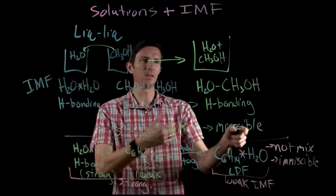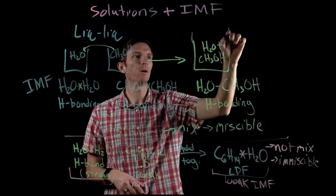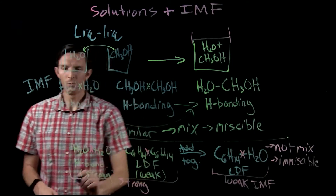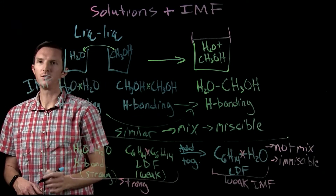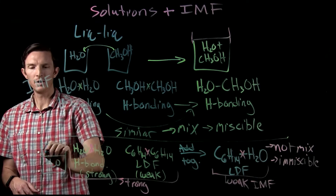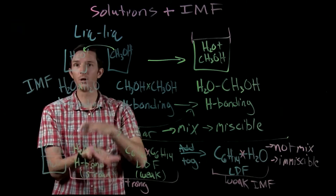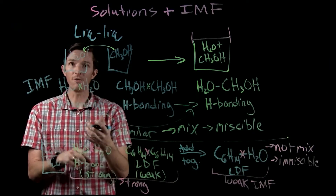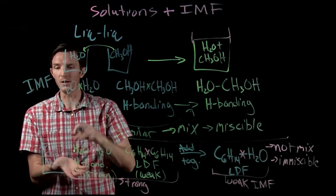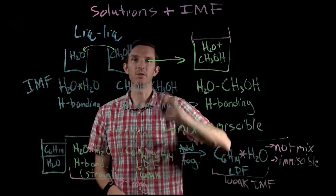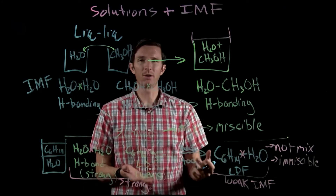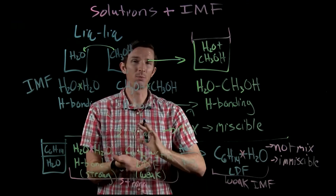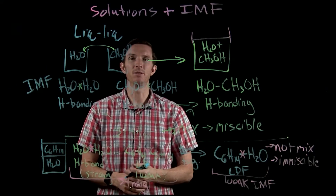What does this look like visually? If we take water and methanol — miscible substances — and mix them, they'll be uniformly mixed together. But if we add hexane and water and try to mix them, we'll notice two distinct layers: a water layer and a hexane layer. They won't mix — just like oil and water in salad dressing. They separate into two distinct layers, representing immiscibility. In our next video, we'll look at not just liquid-liquid interactions, but what happens when we dissolve a solid into a liquid and how intermolecular forces apply in those situations.